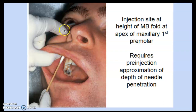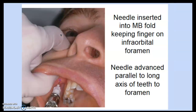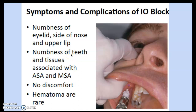The IO block injection site is at the mesial buccal fold at the apex of the maxillary first premolar. It requires pre-injection approximation of needle depth. The clinician holds their index finger over the infraorbital foramen — right under the eye, where you can feel a small dimple — to maintain position. The needle is advanced parallel to the long axis of the teeth to the foramen. Symptoms include numbness of the eyelid, side of the nose, and upper lip, with no discomfort and rare hematomas.